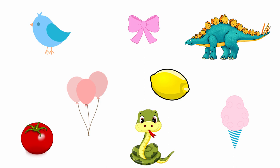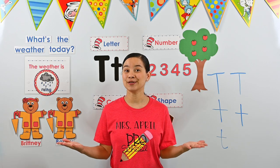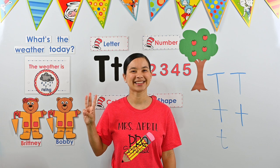Wow, look at all the different colors. Can you find the three things that are pink? Oh look, it's a pink bow. Did you see the pink bow? What else do you see that's pink? Oh look, it's pink balloons. Did you see the pink balloons? Fantastic. There's one more thing that's pink — can you find it? It's pink cotton candy. Great job, friends! You found the three things that were pink.